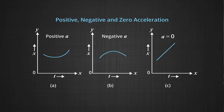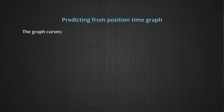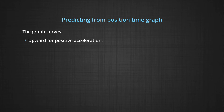In graph C, the straight line suggests that the velocity is constant, and if velocity is constant, we are talking about zero acceleration. So we can predict from a position-time graph: an upward curve indicates positive acceleration, a downward curve indicates negative acceleration, and a straight line indicates zero acceleration.